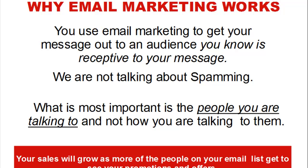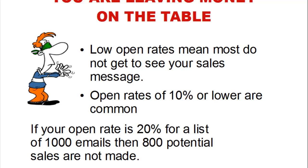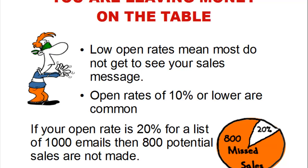Clearly, the more people on this list that get to see your sales and promotional messages, the better. But there's a problem: with email marketing, not everybody in your list gets to see your message. Open rates vary wildly, and open rates of 10% or lower are not uncommon. Even good email marketing might get an open rate of 20, 30, or 40%, but it still means a lot of people are not seeing your email. If we take an email list of a thousand addresses and you get a 20% open rate, that's great — but it also implies that 80% do not get to see it.